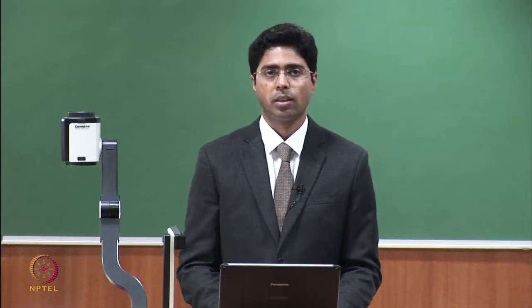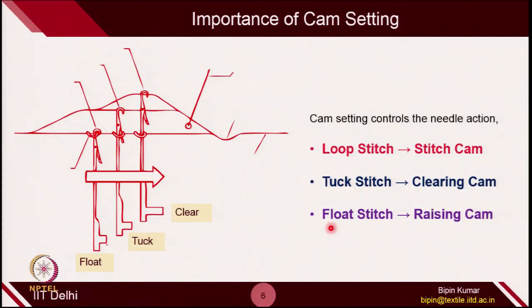The direction of carrier movement — left to right and right to left — and specifying the relative cams is extremely important in fabric designing. Regarding cam setting: in the case of float, the needle just follows a straight path; it will not rise, but simply remain idle on the machine, retaining its old yarn. For tuck, the needle rises but does not clear the old loop with the help of the clearing cam, and then it will catch the new yarn.